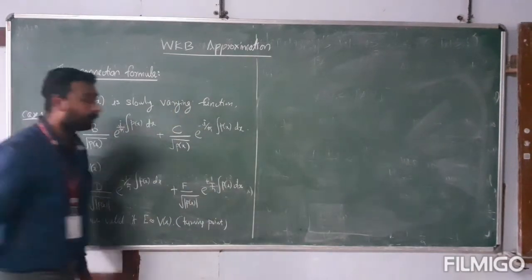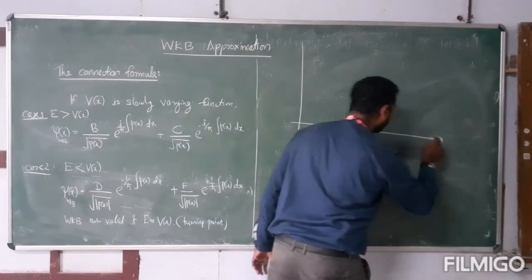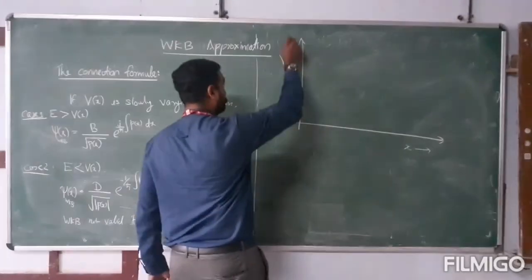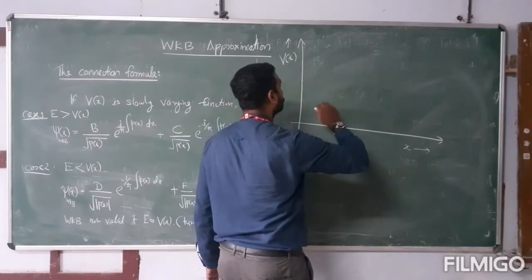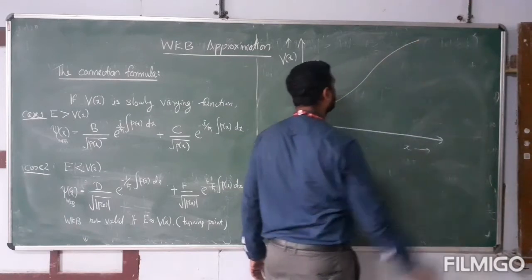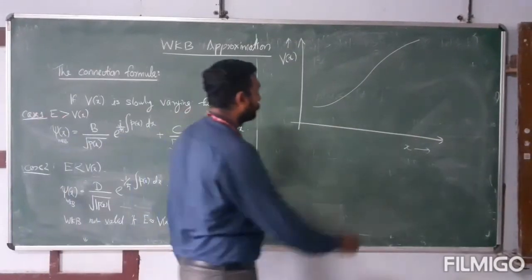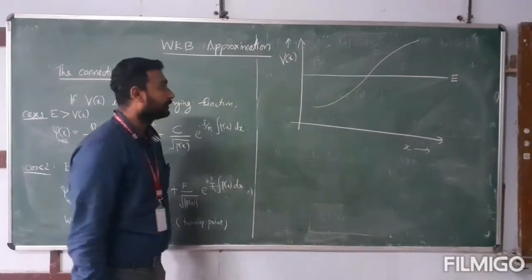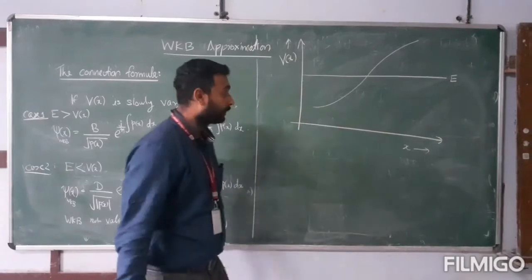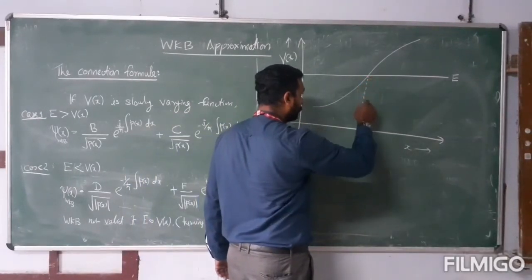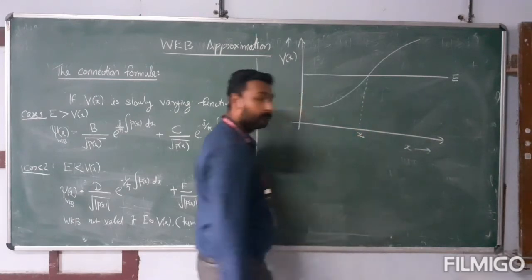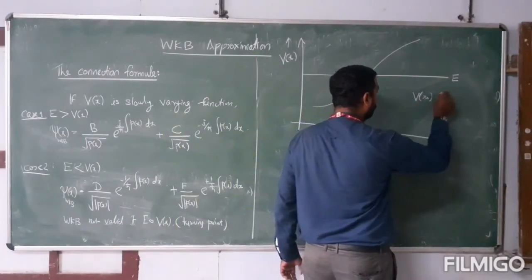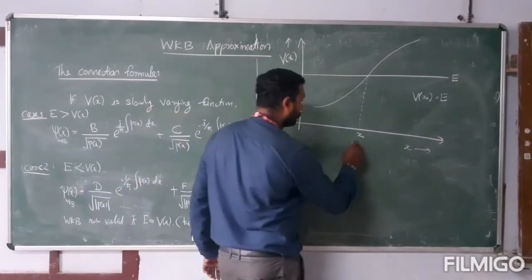Let us take one example. Consider a potential of the system varying like this, and the total energy of the system is capital E. Now here there is one point: this point of the system is at x0. At the point x0, the potential and energy is almost the same. So the potential at x0 equals E, and therefore x0 is called the turning point.